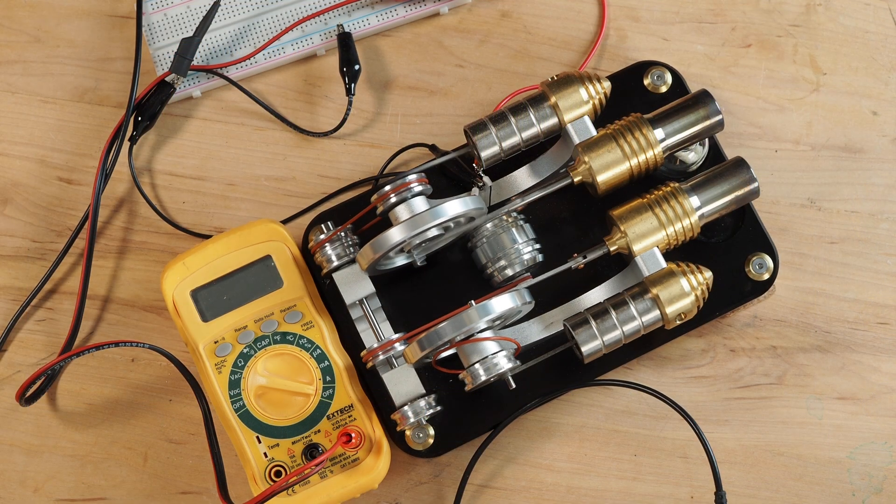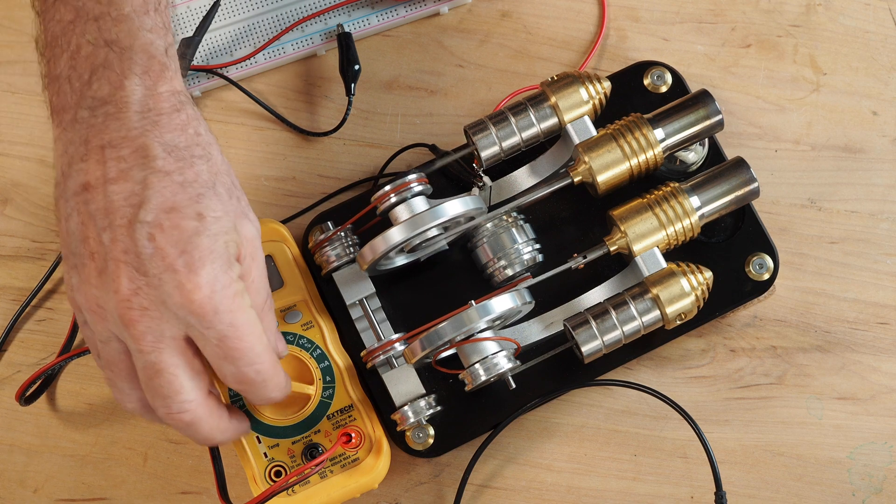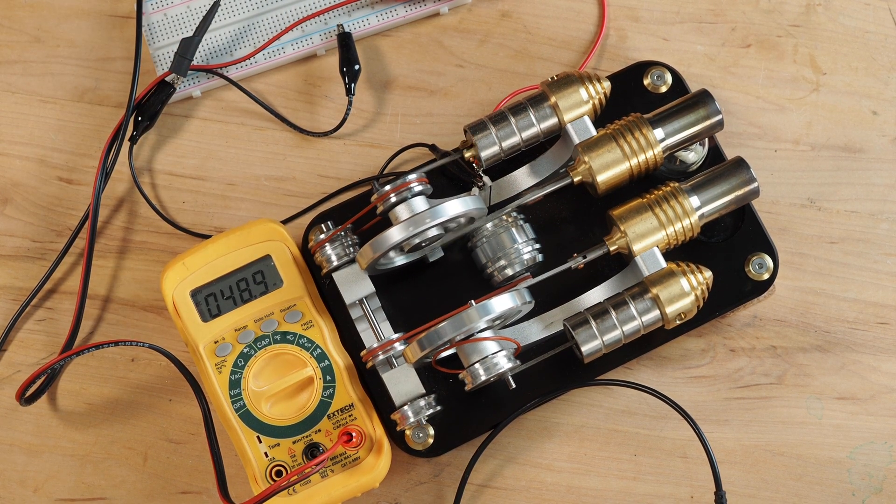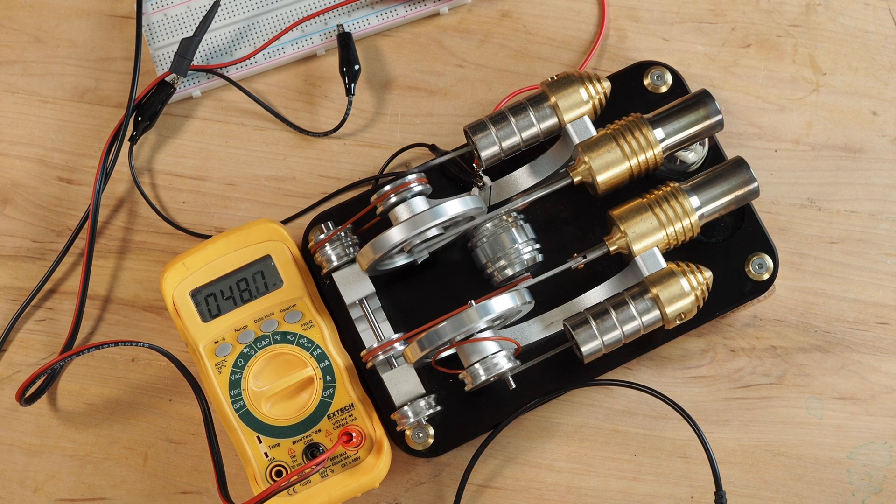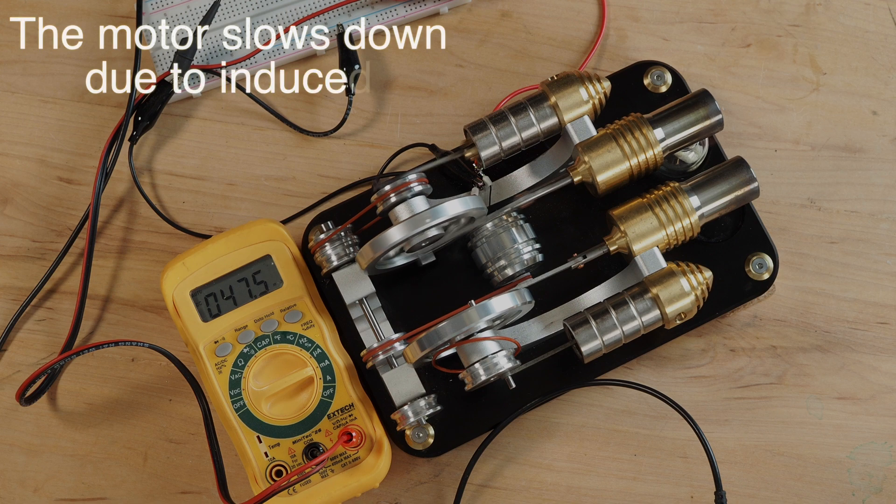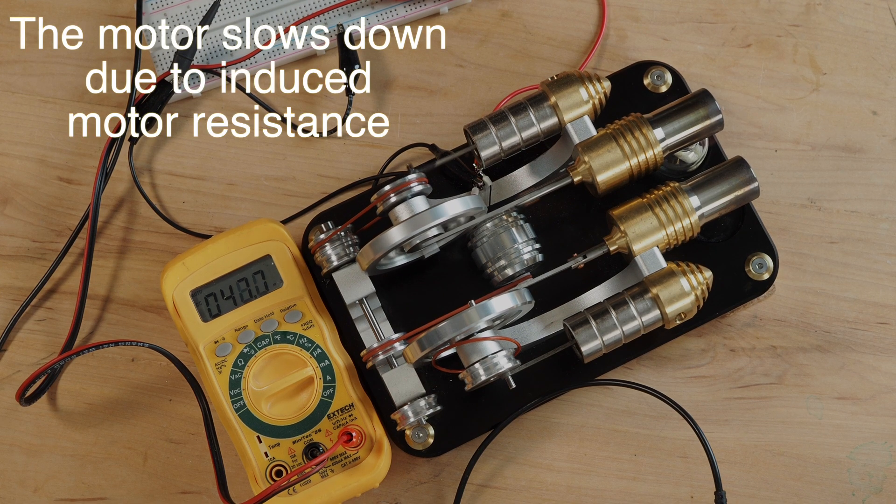A more important question may be how much current can we pull from the DC motor generator? In this test, we are running the output from the generator through a digital multimeter and we're getting about 48 milliamps of current, which is more than the 30 milliamps that we said we needed earlier.